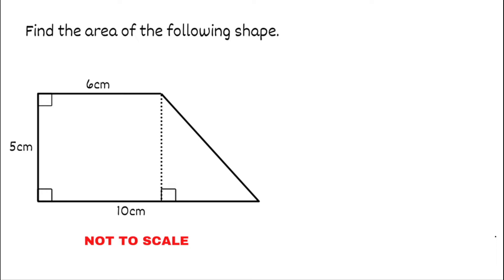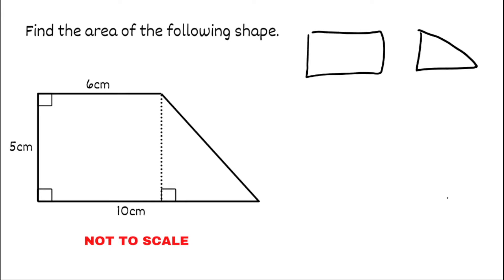For this first question we need to find the area of the following compound shape. What we can do with questions like these is split them into separate shapes. If I cut the shape down that dotted line I'd have a rectangle and I'd also have a triangle. Looking at my original diagram I know the width is six centimeters and the height is five centimeters.